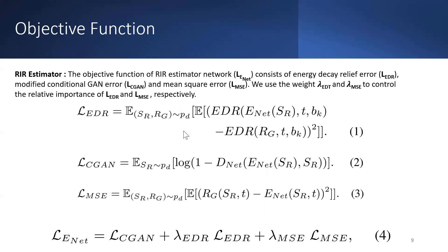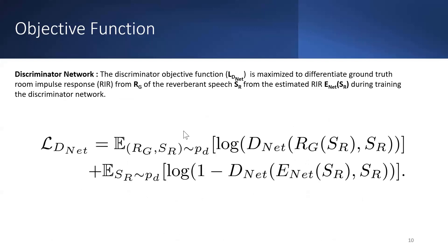Energy decay relief error is used to match the energy distribution of the estimated room impulse response to the ground truth over a set of octave frequency bands. The conditional GAN error is used to estimate a room impulse response from the reverberant speech that is difficult to differentiate from the ground truth by the discriminator network during training. Mean square error is used to match the time domain representation of the estimated and ground truth room impulse responses. We use relative weights lambda-EDR and lambda-MSE to control the relative contribution of energy decay relief error and mean square error. The discriminator objective function is maximized to differentiate between the estimated room impulse response and the ground truth.